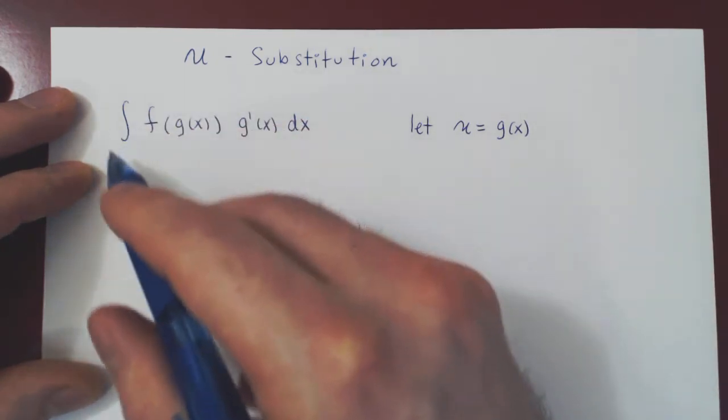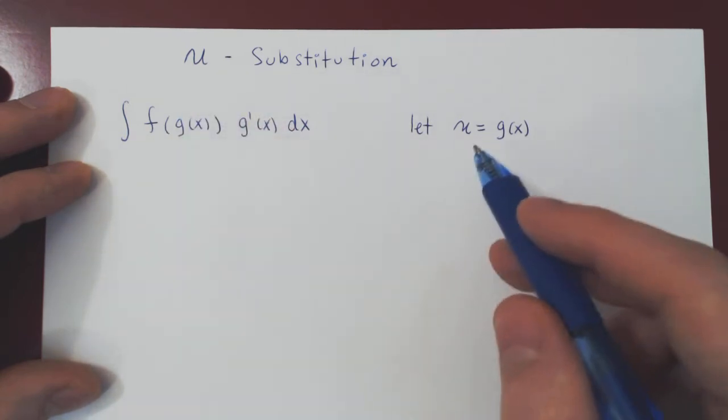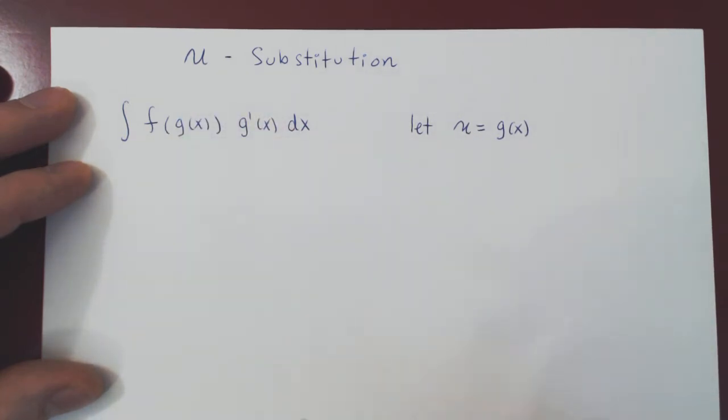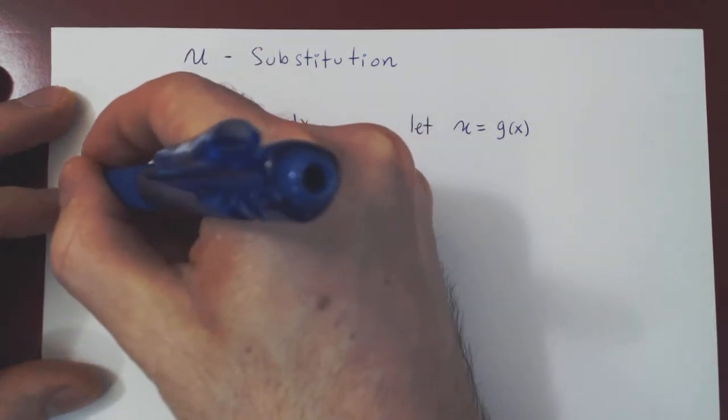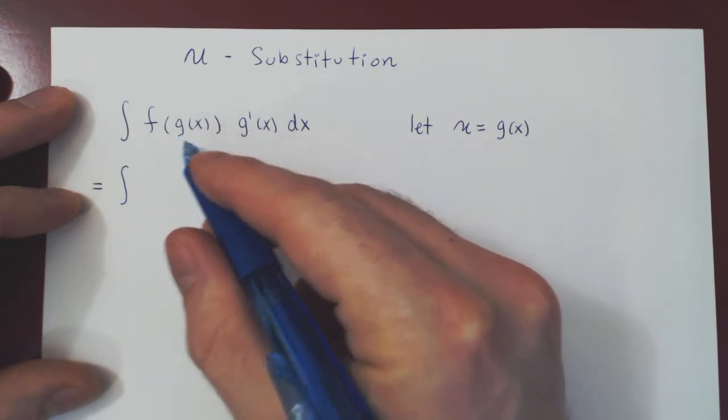Well, let's see how this integral as a function of x will be transformed now as a function of u. Let's replace one thing at a time. Well, if you look here, we have f of g of x,